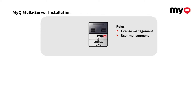The second role is about user management. The central server should automatically synchronize all your users, and the same way as for the licenses, it's up to you to decide which users should be available on which site. Another role is system management — this server allows you to control the whole system. For that reason, you have here the full list of all the sites and you can easily access them through the available links.